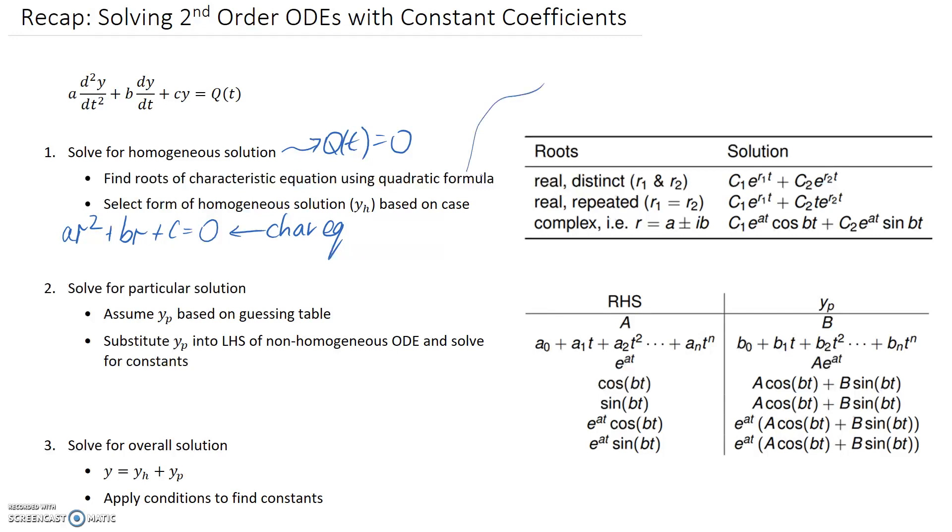So remember the quadratic formula? It would solve for the unknown, which is r, and it's the negative b plus or minus b squared minus 4ac all over 2a, this one here.